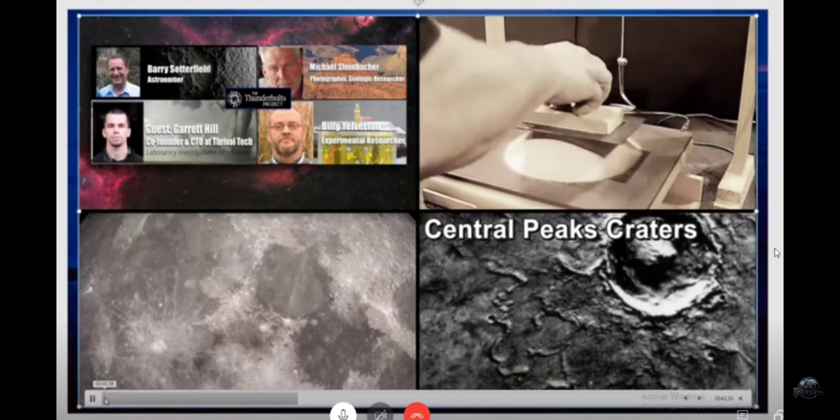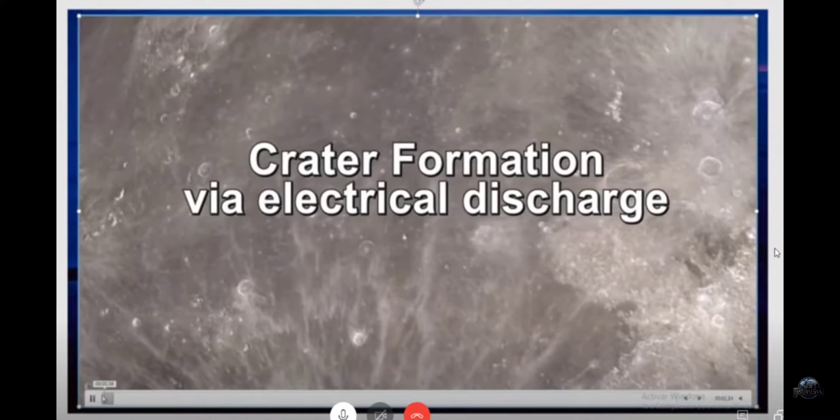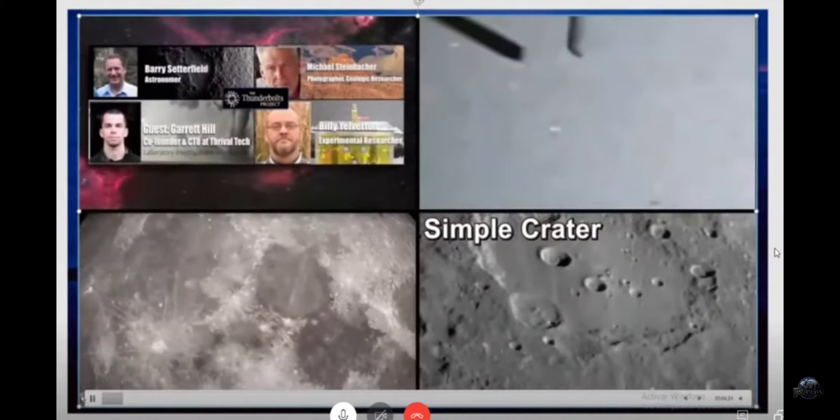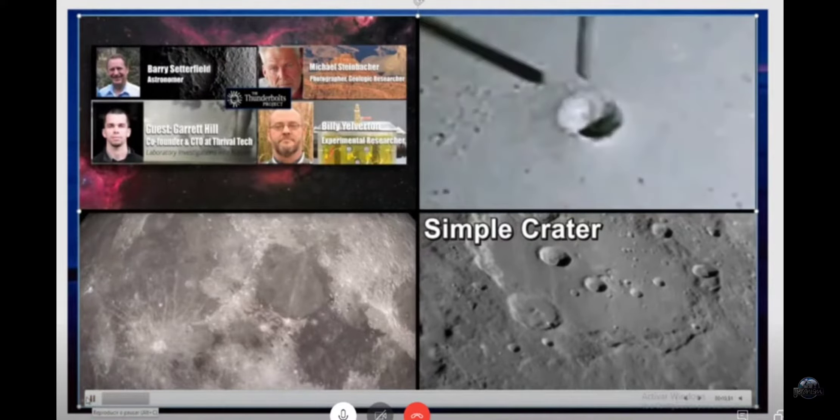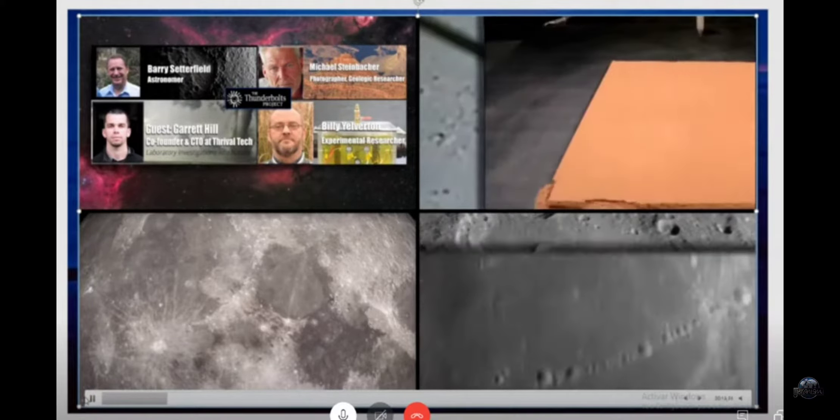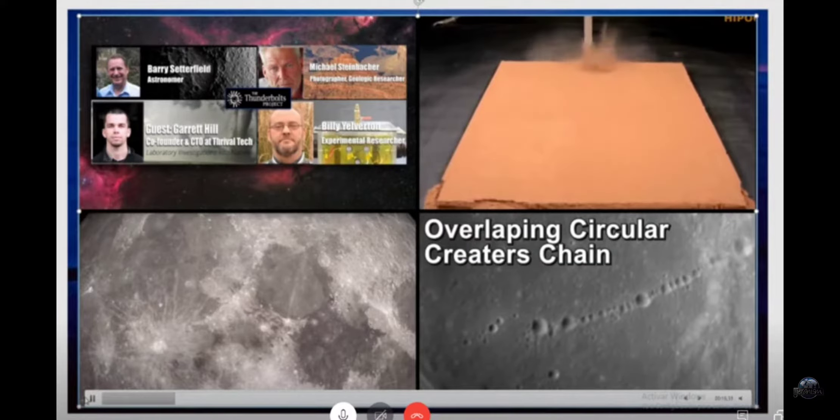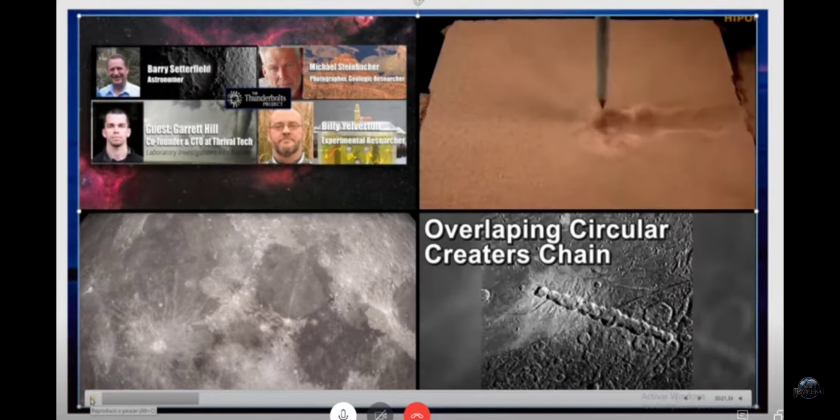And again, if you go for example to the moon and try to study its surface, well at least in the lab with electrical discharges, you can recreate all types of the craters that we see. And of course in the so-called standard model based on asteroid impact...